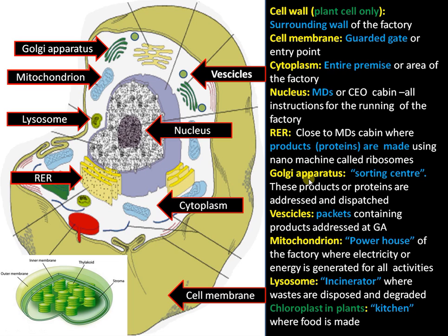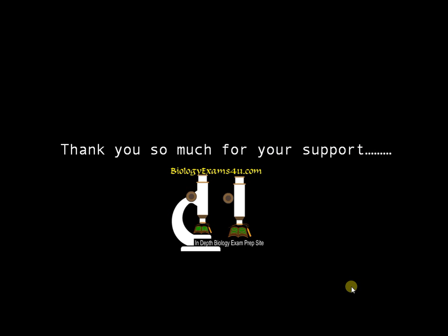The Golgi apparatus is the site where all proteins are properly addressed, sorted, and dispatched using vesicles — small packets that are properly addressed at the Golgi apparatus. Mitochondria is where energy is produced or ATP is synthesized for all cell activities. Lysosome is the waste disposal site, like an incinerator. In plants, there is a kitchen or food-producing center — the chloroplast — where photosynthesis takes place, converting light energy to glucose used by all organisms.